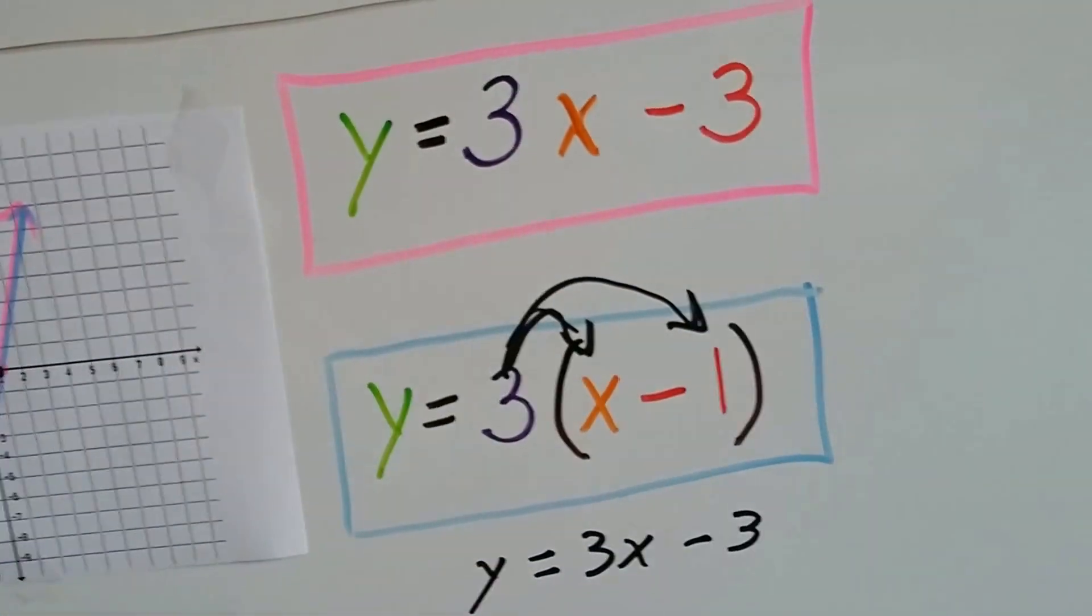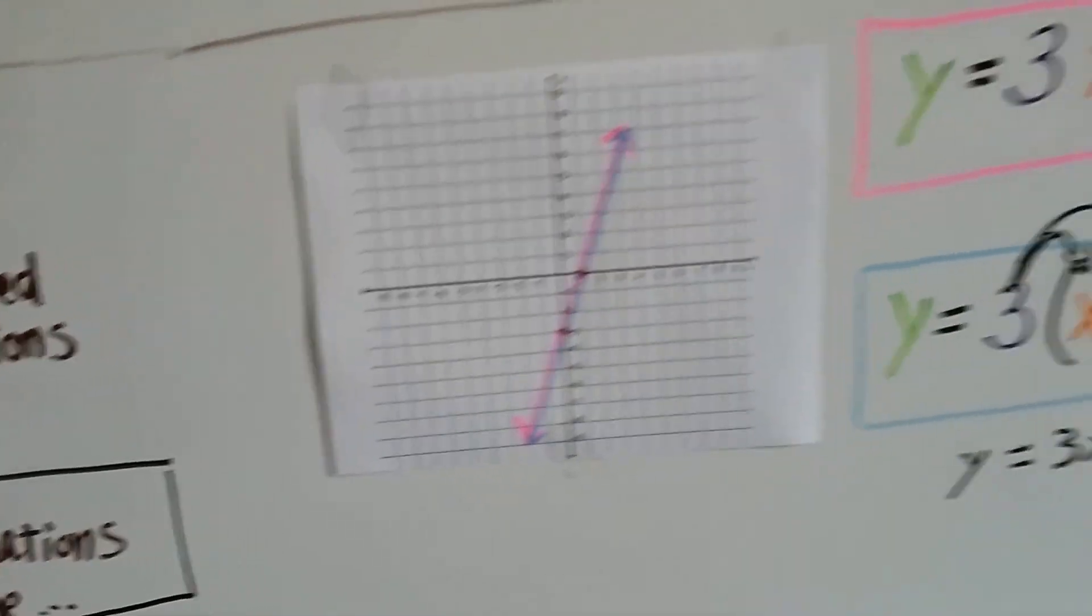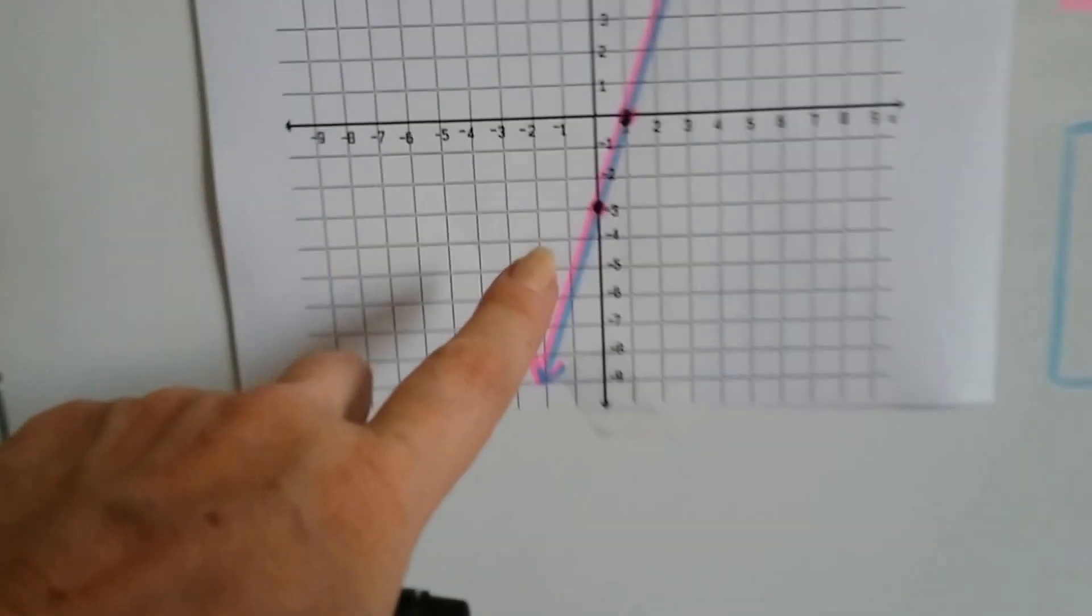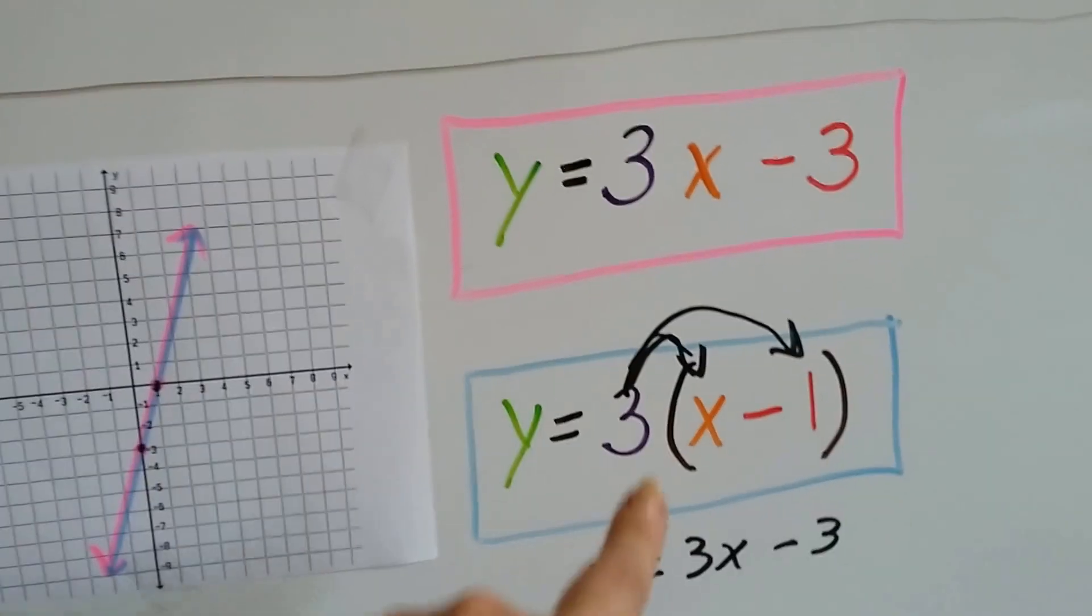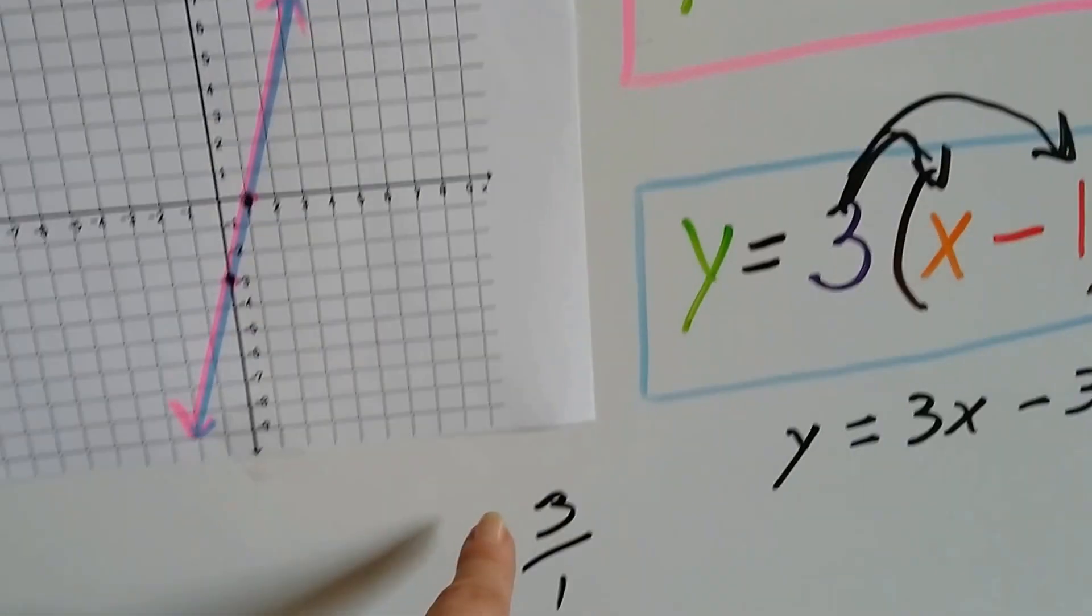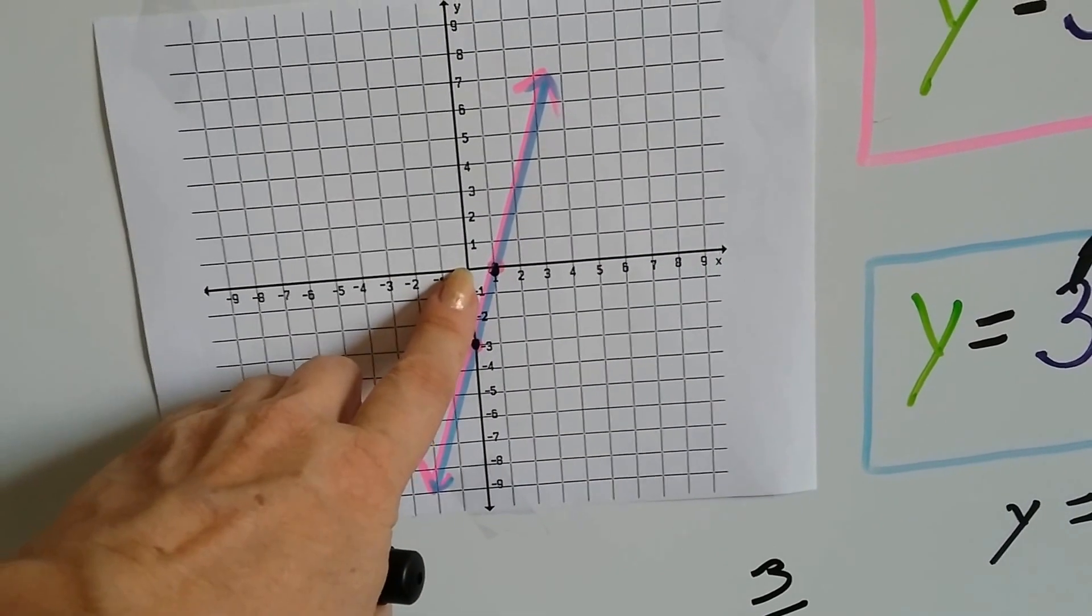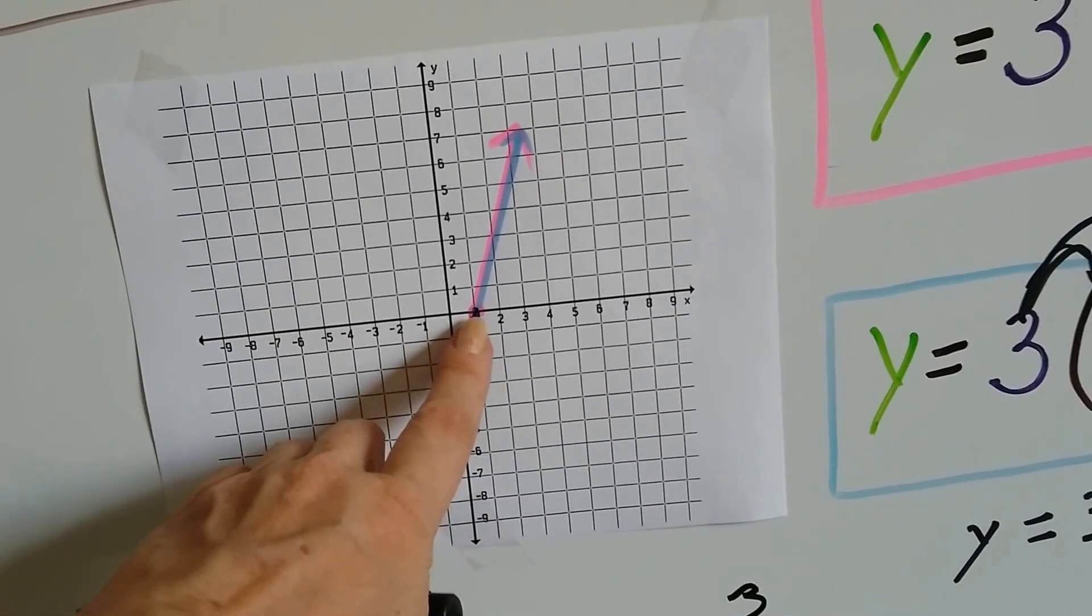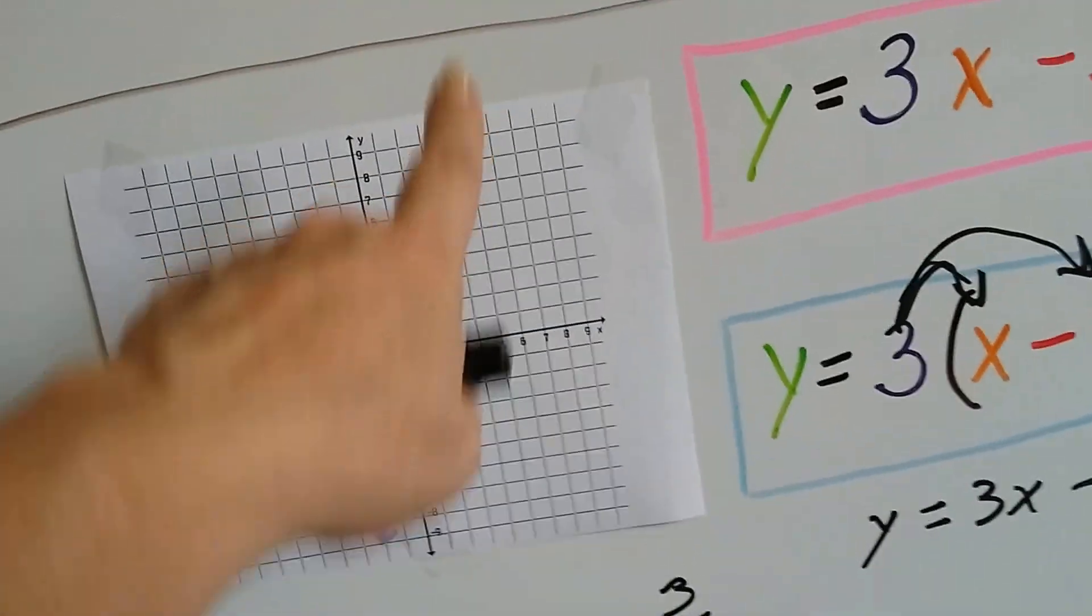Y equals 3X minus 3. Y equals 3X minus 3. You know what happens when we go to graph it? It's got the same Y intercept, negative 3, and it's got the same slope, 3, which is 3 over 1, our rise over our run. So we're going to go 1, 2, 3 up for our rise and over 1. So we've got this point and this point. We draw our pink line through it, we get that. We draw our blue line through it, we get that. It's the exact same line.